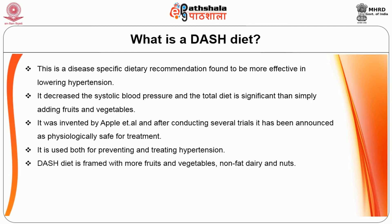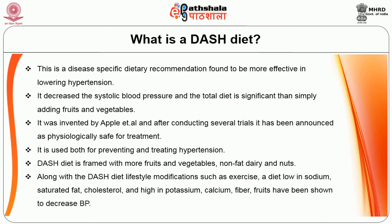The DASH diet is framed with more fruits and vegetables, non-fat dairy, and nuts. Along with the DASH diet, lifestyle modifications such as exercise, a diet low in sodium, saturated fat, and cholesterol, and high in potassium, calcium, fiber, and fruits have been shown to decrease hypertension. The major sources of energy should be from whole grain cereals and legumes, and vegetables and fruits intake should be restricted as per the dietary management for diabetes.